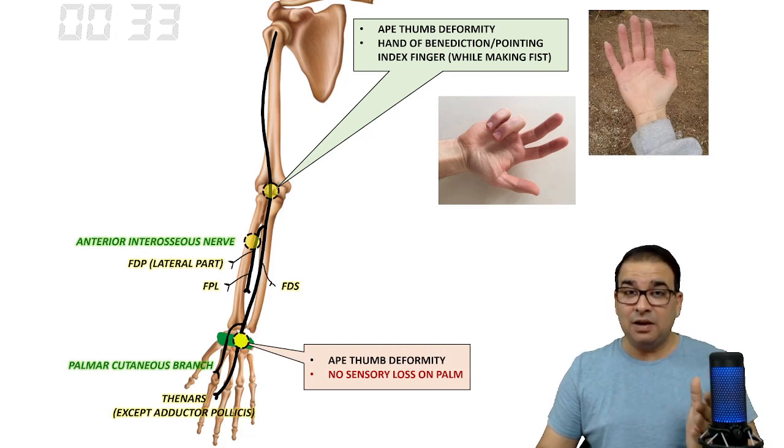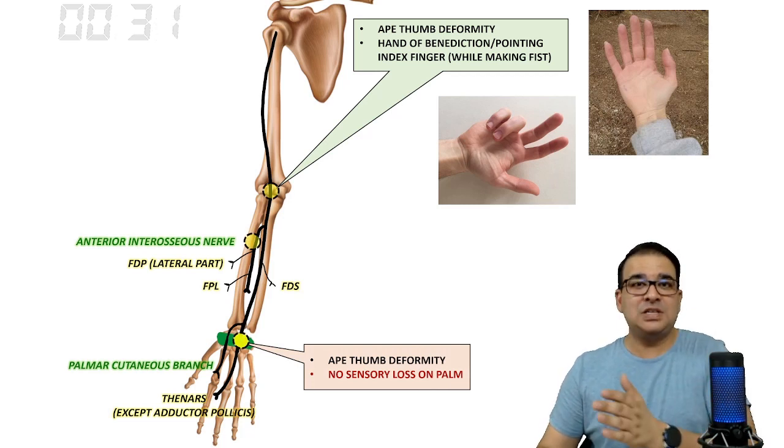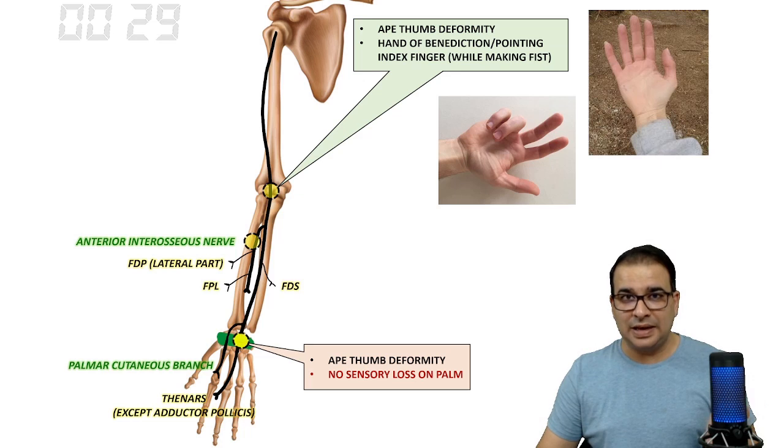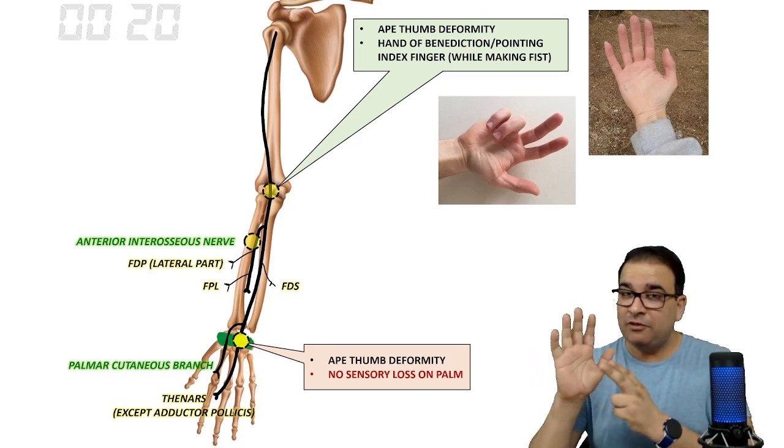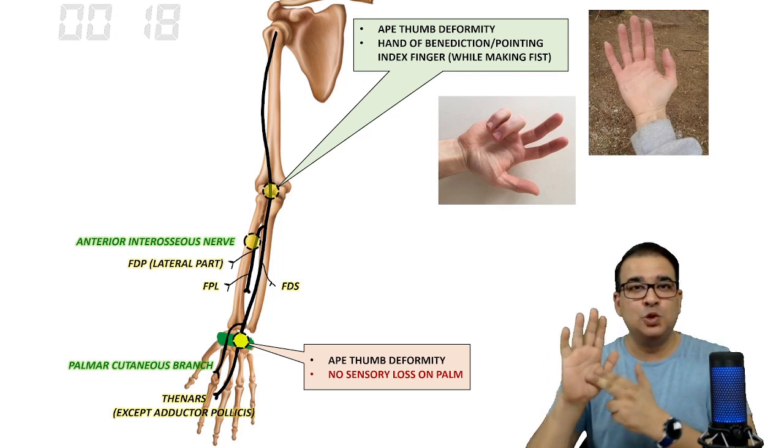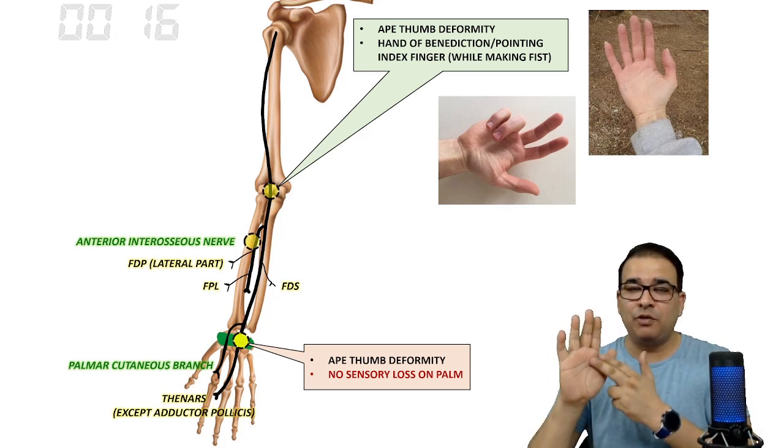In a distal injury, there will again be ape thumb deformity. Obviously there will be no pointing index finger in this case. Importantly, because the palmar cutaneous branch is spared, there will be no sensory loss on the lateral 3.5 of the palm—there will be sensory loss on the digits, but not on the palm.